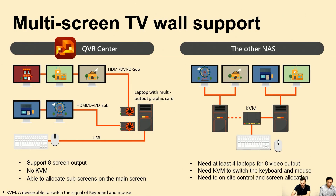The QVR Pro Center solution requires only one desktop with a multi-output graphics card to support up to eight external displays — no KVM needed. It can allocate many sub-screen contents on the main screen. In contrast, other external display solutions allow only two external screens per host, so to achieve eight external screens, four computers are needed, with keyboard and mouse signals switched through KVM and on-site content allocation required.